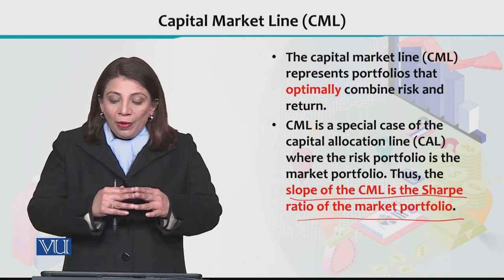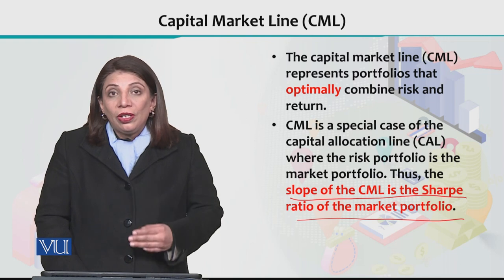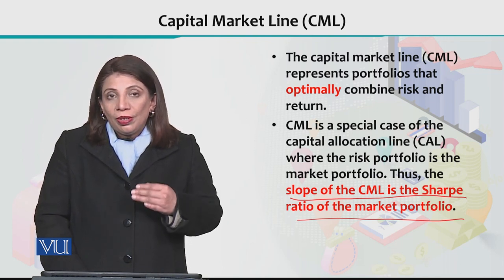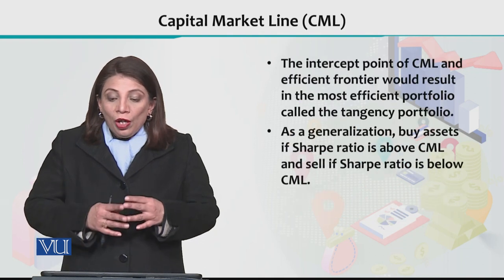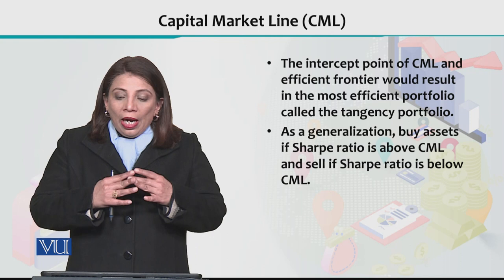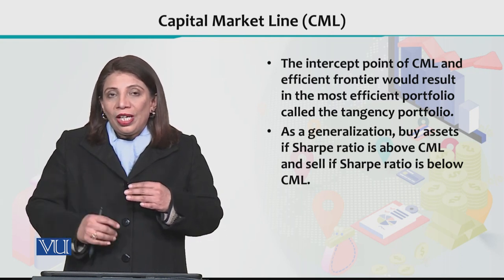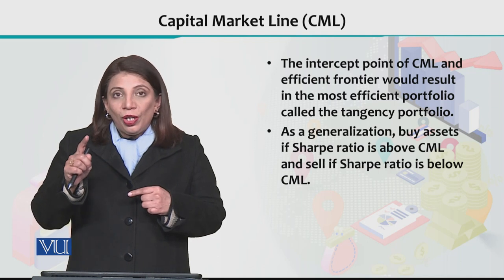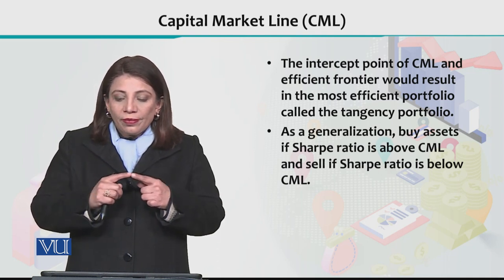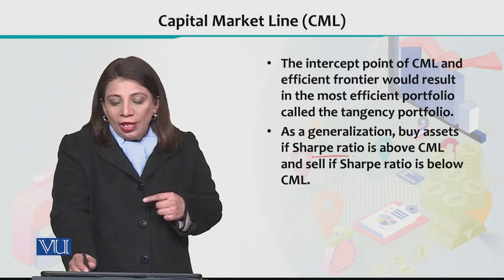I am going to further explain that CML's slope equals the Sharpe ratio. When we look at the intercept point of CML and the efficiency frontier, this is the capital allocation line where the point of tangency meets the efficiency frontier — and that tangency point gives the special slope equivalent to the Sharpe ratio.